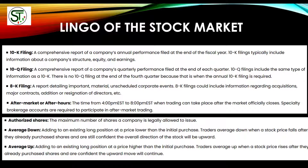Authorized shares is the maximum number of shares a company is legally allowed to issue. For example, if Apple is authorized to issue 10 million shares, that's how many will be in the market. Next is average down — adding to an existing position as the price falls. If you have 100 shares of Apple at $100, then it drops to $90 and you buy another 100, then drops to $80 and you buy more, you're averaging down.